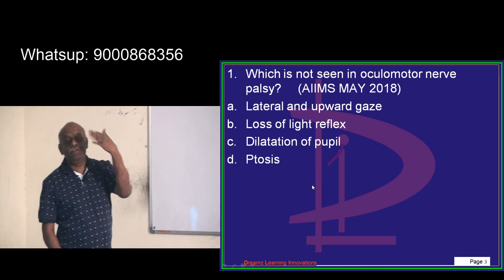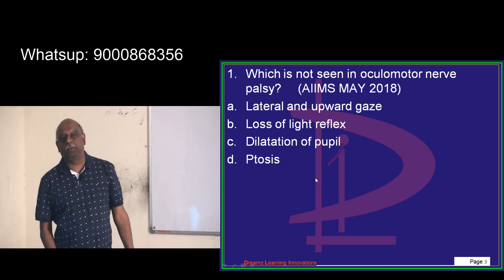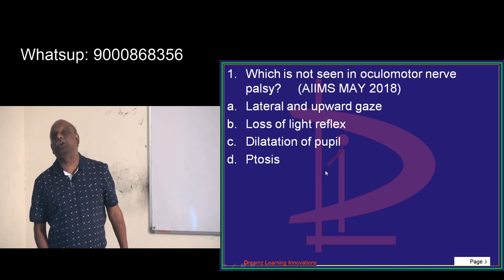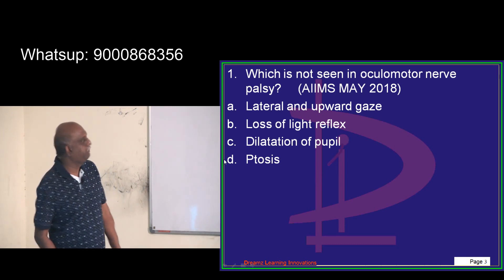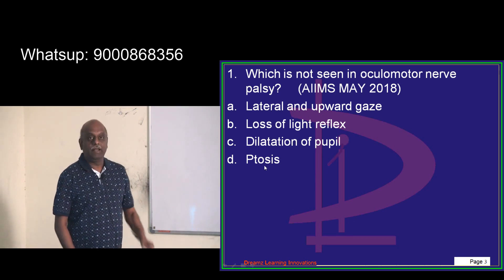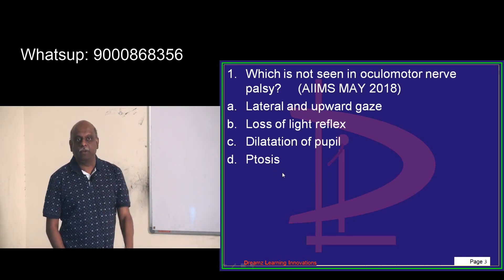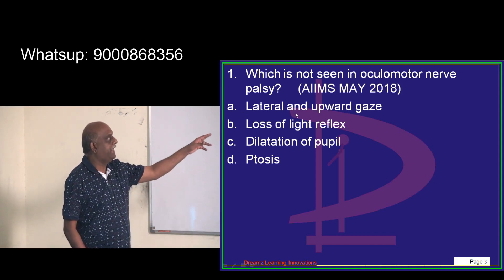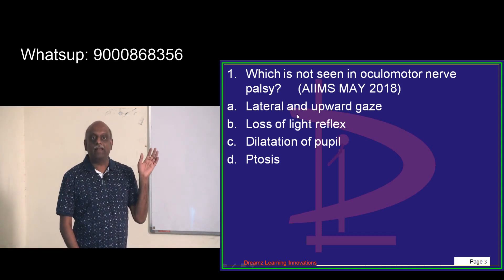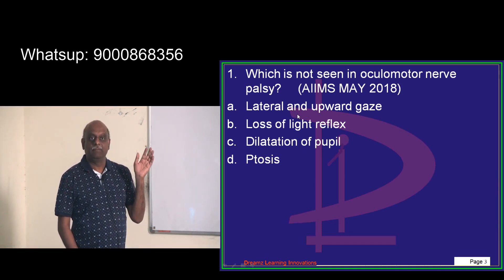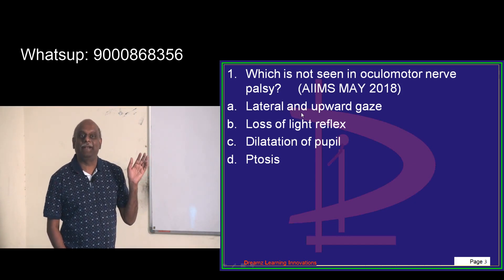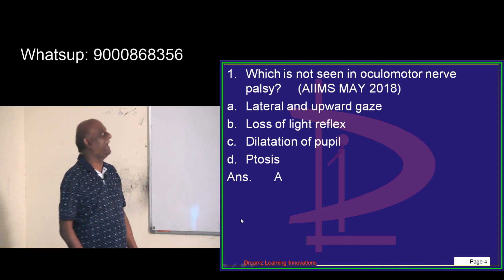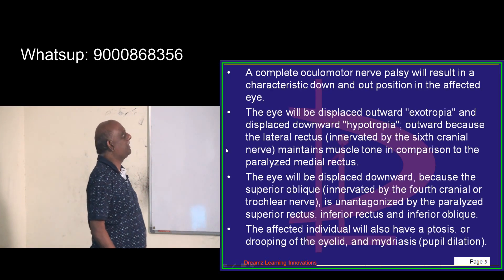Ptosis will be present because the levator palpebrae superioris is supplied by the oculomotor nerve. Dilatation of the pupil will be there. There will be lateral gaze but not upward. Downward gaze will be there — that is what you need to remember.